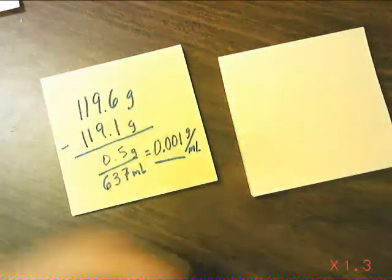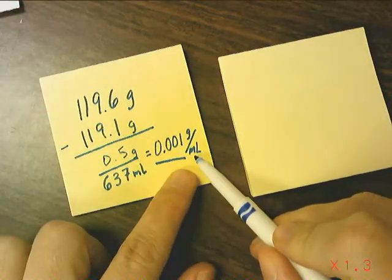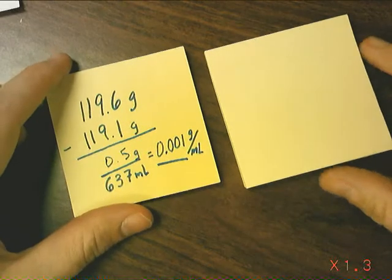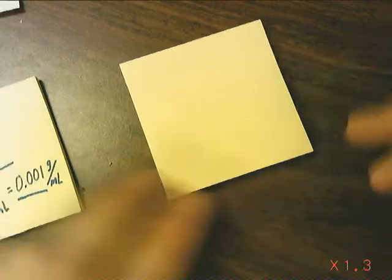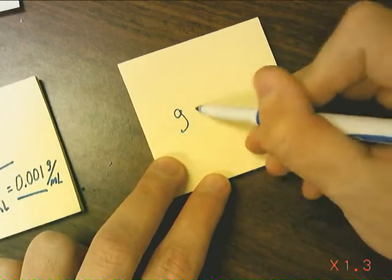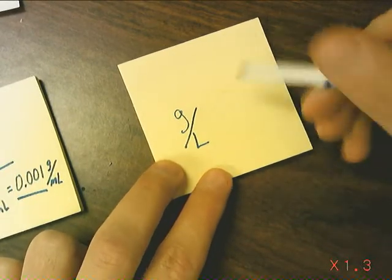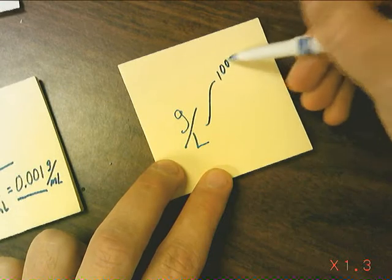Because 1,000 milliliters make up one liter, it may be more wise to report the density of gases in units of grams per liter. A liter contains 1,000 milliliters.